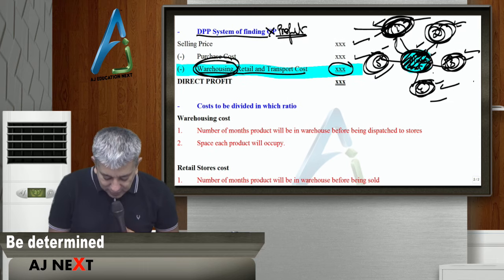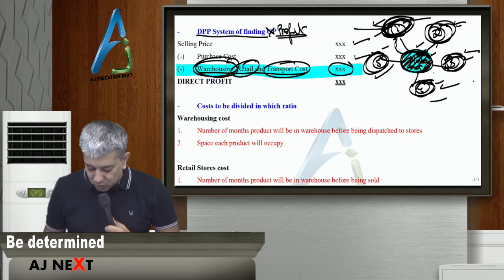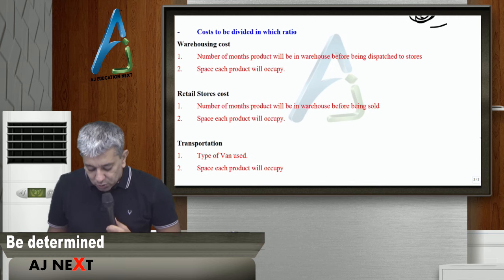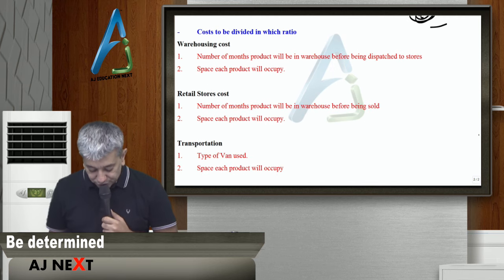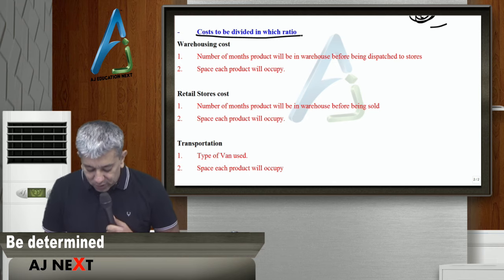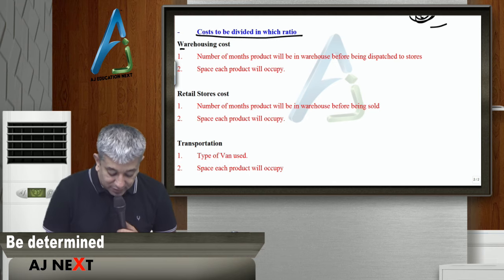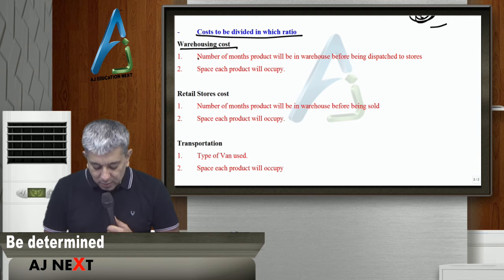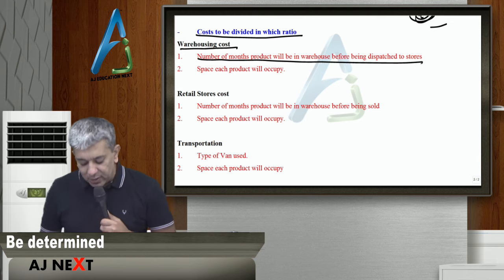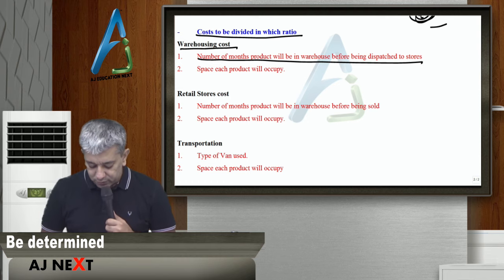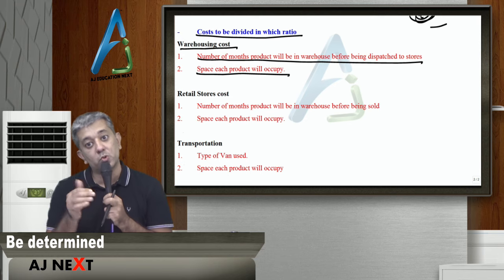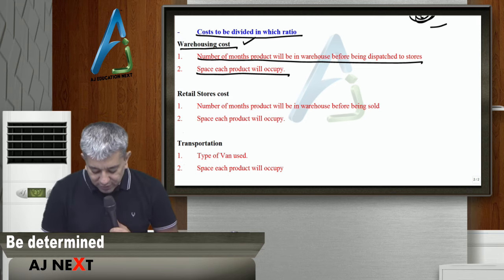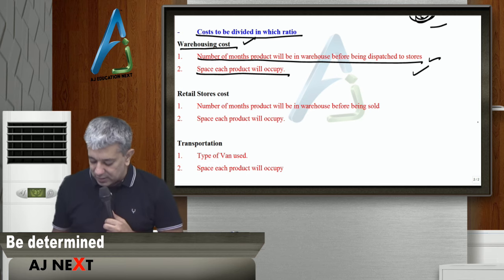Toh, aur jab aap yeh, yeh, ya yeh wala cost charge karoge, toh then in that particular case, we have to consider other things also. Cost to be divided in what ratio or what factors you have to consider? Warehousing cost. Number of months product will be in the warehouse before being dispatched to the stores. That's what I told you. Space each product will occupy. Common sense na beta. Koi product will occupy more space. Toh usko zyada cost charge hona chahiye. Toh warehousing cost jab divide karte ho, toh yeh dono cheezein consider kar lena.